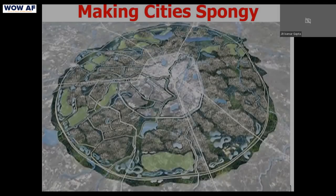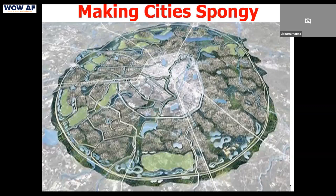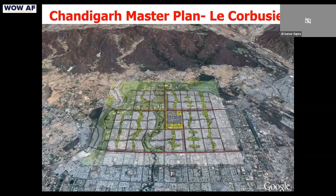The city is spongy, so you have more open spaces and green spaces where water is retained by earth and trees. This is the Chandigarh master plan, which took cognizance of rainwater. The choe — a seasonal water channel — was never used for urbanization. The entire park belt, from 100 meters to 300 meters, runs all across the city.